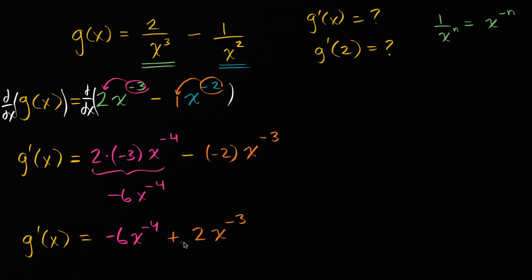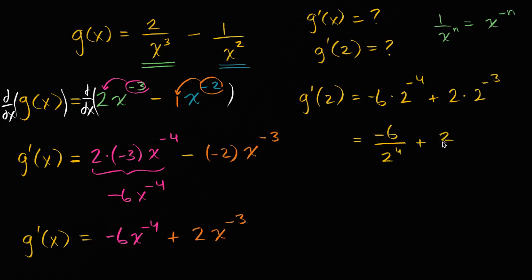We can express g prime of x as a function of x. Now let's just evaluate what g prime of two is. So the g prime of two is going to be equal to negative six times two to the negative fourth power plus two times two to the negative third power. Well, what's this going to be? This is equal to negative six over two to the fourth plus two over two to the third, which is equal to negative six over two to the fourth is sixteen, plus two over two to the third is eight.